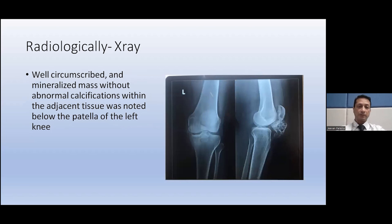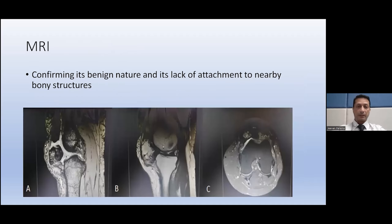Regarding the radiology, it was a well-circumscribed, mineralized mass with no abnormal calcification noted. It was contained within the adjacent tissue with no involvement of adjacent structures, and was located well below the patella of the left knee joint. On MRI — with T1 and T2 images — it was confirmed to be benign in nature, with no attachment to nearby bony structures.